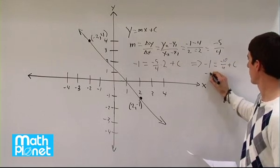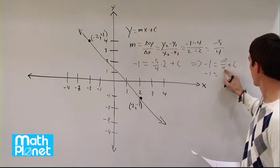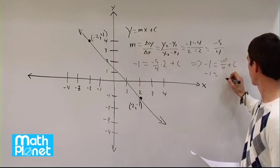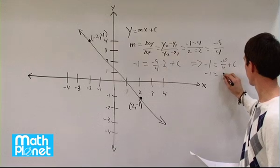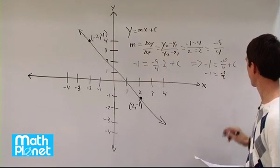And then this simplifies to negative one equals, if we have negative ten divided by four, we can write that as negative five-halves. So that's pretty simple.